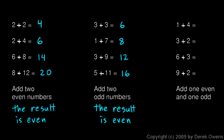Now let's look over here. 1 plus 4 — we have an odd number and an even number added together, and that's the case for all of these. 1 plus 4 is 5, 3 plus 2 is 5, 6 plus 3 is 9, 9 plus 2 is 11. If we add one even and one odd number, the result is odd.